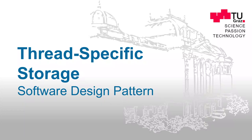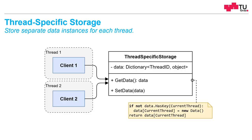In this video I'll briefly describe the thread-specific storage design pattern. Thread-specific storage is about storing separate data instances for each thread. Normally when you have two threads they would overwrite each other's data because they are in the same address space and have access to the same variables and objects, which could lead to problems.